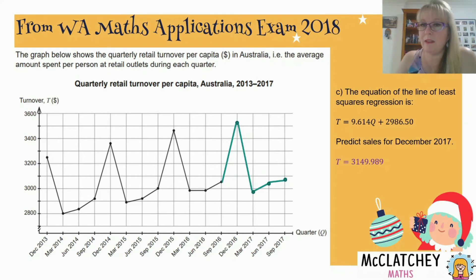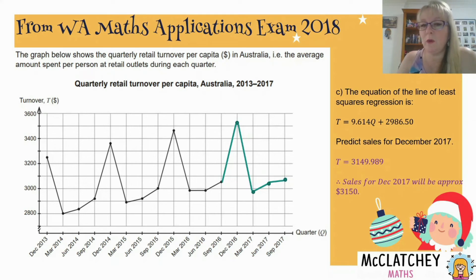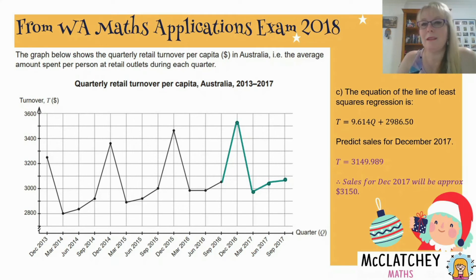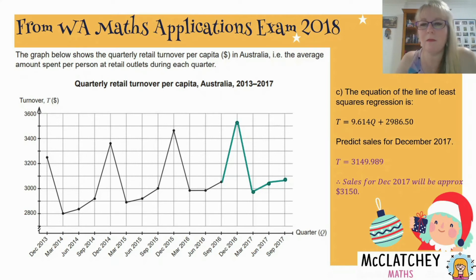The important thing to remember is that T equals sales turnover, so you need to write a statement relating it back to the context. I would round that off correctly — it doesn't make sense to round to 99 cents as that's very precise. We would round to the nearest dollar to make a logical answer for the exam.